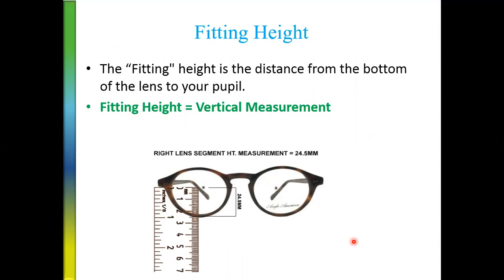First, let's see the basic definition of what we mean by the fitting height. Fitting height, as you see in the picture, is nothing but the vertical measurement from the bottom of the lens to the center of the pupil. This is the center of the pupil and this is from where we measure — this is known as fitting height. In this case, the fitting height is close to 24 mm.